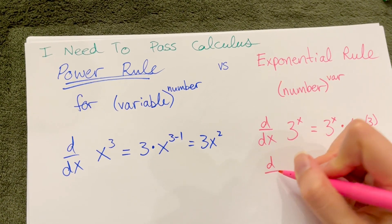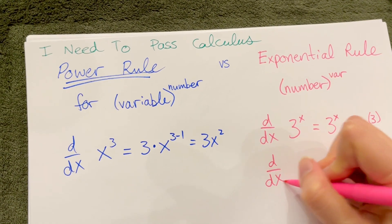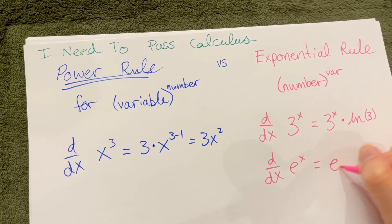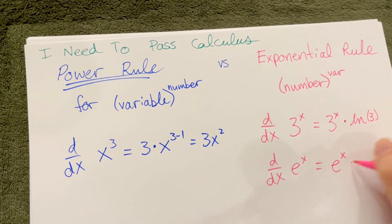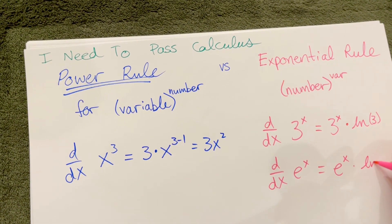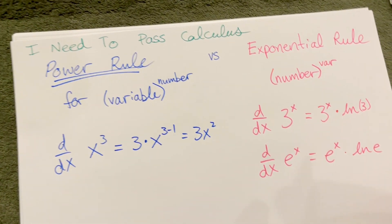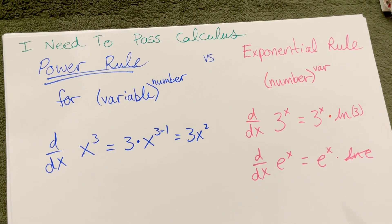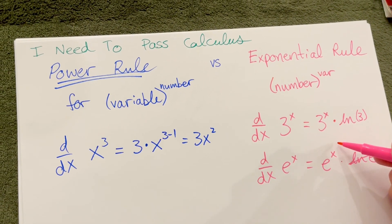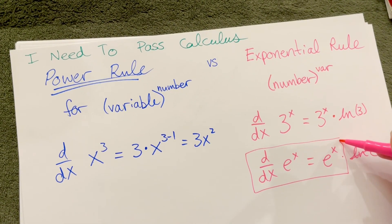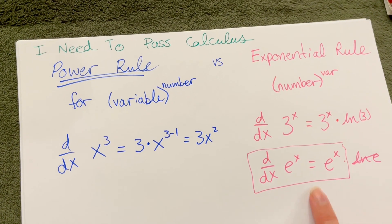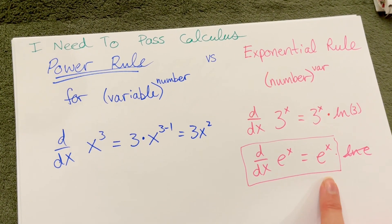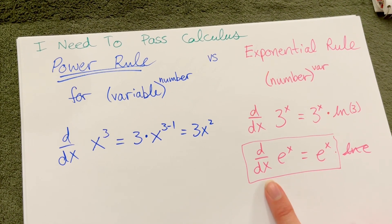Another really famous exponential rule derivative is e to the x. That one is just e to the x. You can view it as times ln e, but ln e is just 1. So often you'll just memorize this very special derivative rule — it's the only function that equals its own derivative.